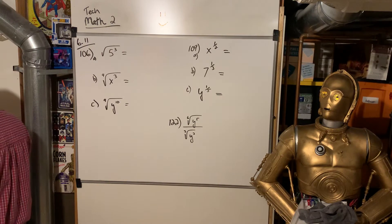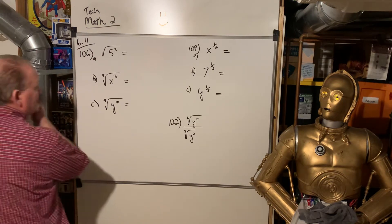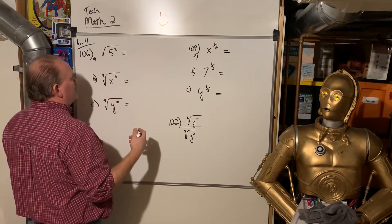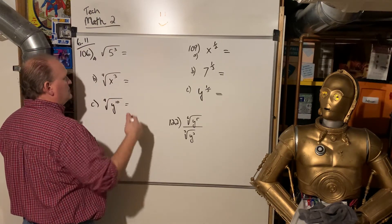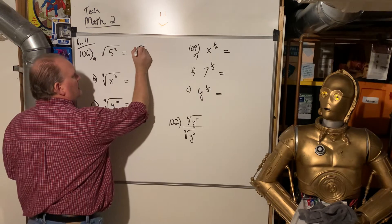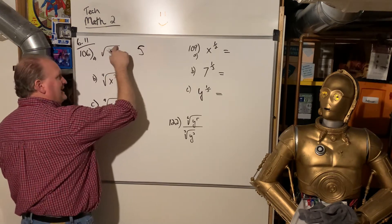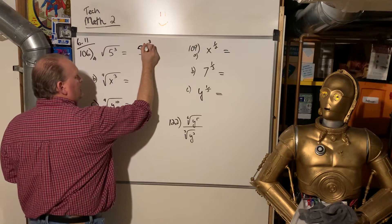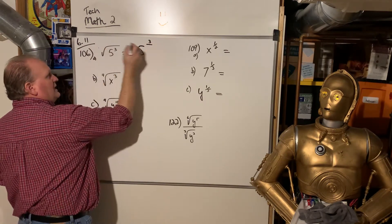285 in the Red Book, 6.11, fractional exponents. So they want us to write these as fractional exponents. So you just take it and say, whatever is on inside, that goes on the top, and the index that's on the outside, that goes on the bottom.